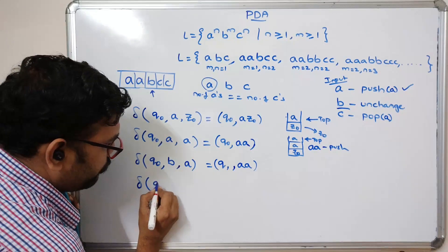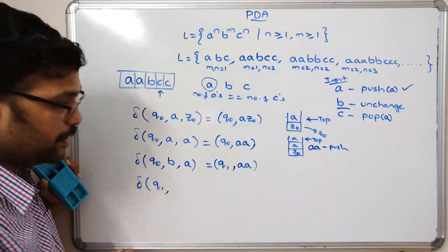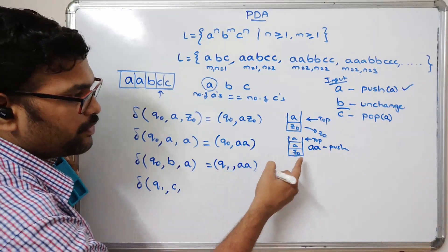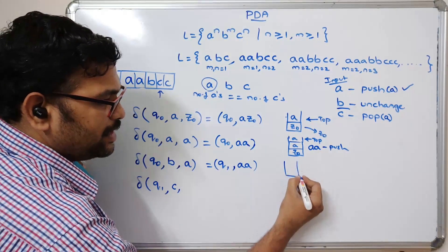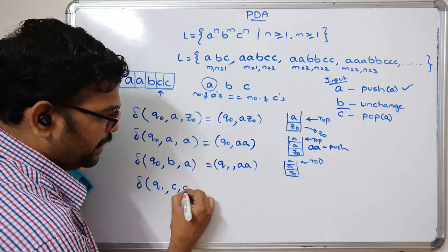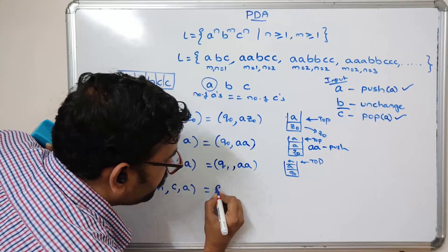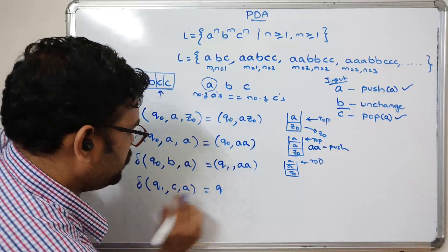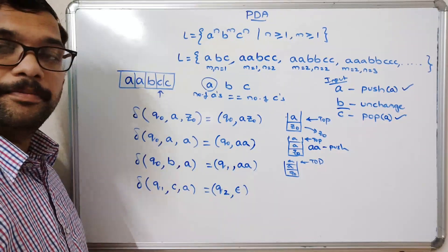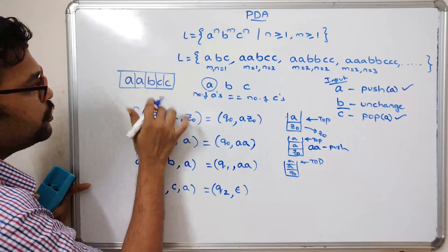Now delta(q1, c, a): the input is 'c' and the top of the stack is 'a'. Whenever we get 'c' as input, we need to pop. So delta(q1, c, a) gives q2, and the top element 'a' is automatically popped from the stack.